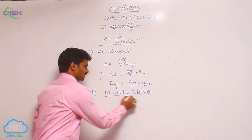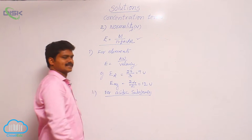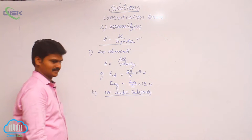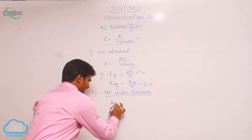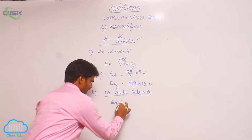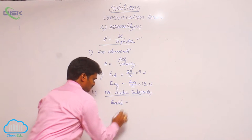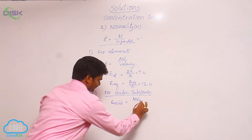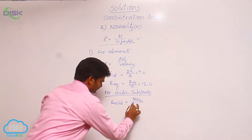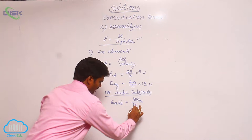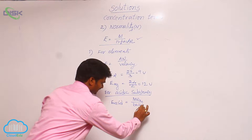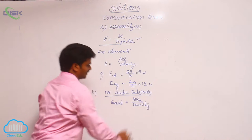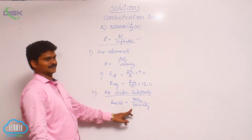Let us see for acidic substances how to find out the equivalent weight. Equivalent weight of acid equals to molecular weight of acid divided by its n-factor. Here n-factor means basicity.